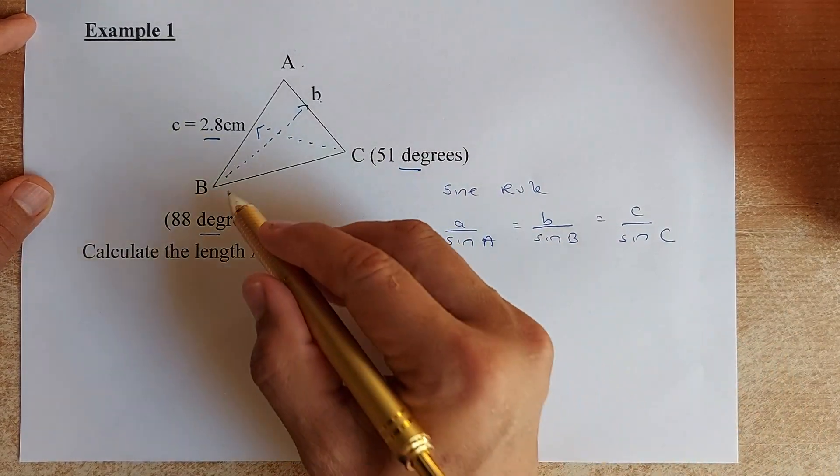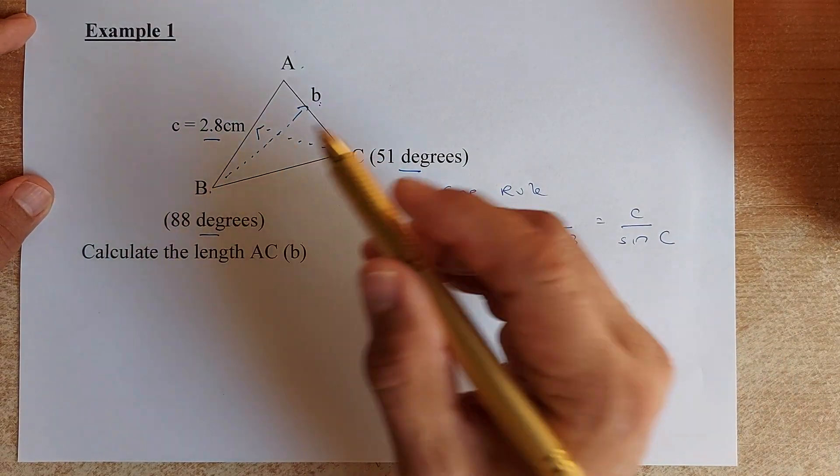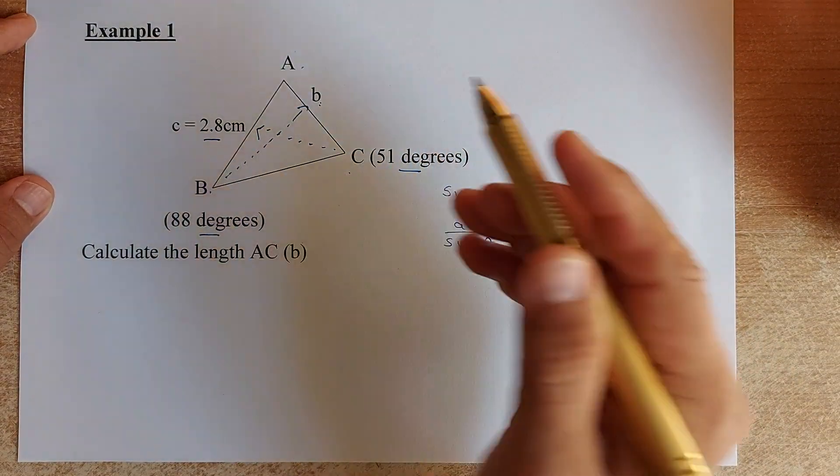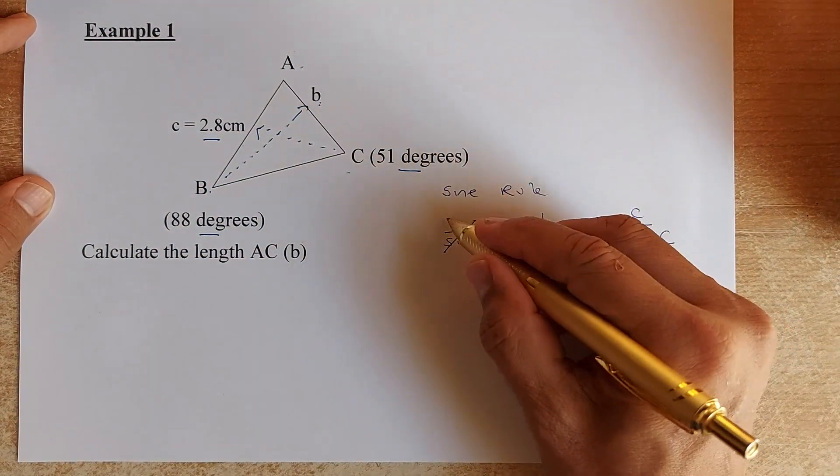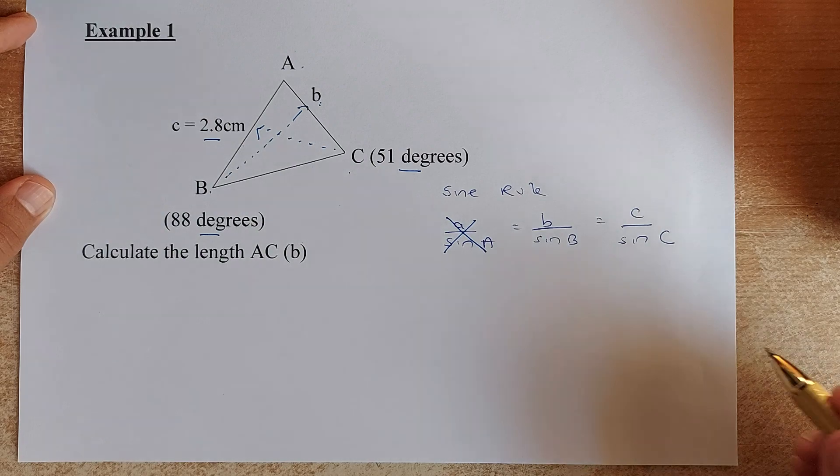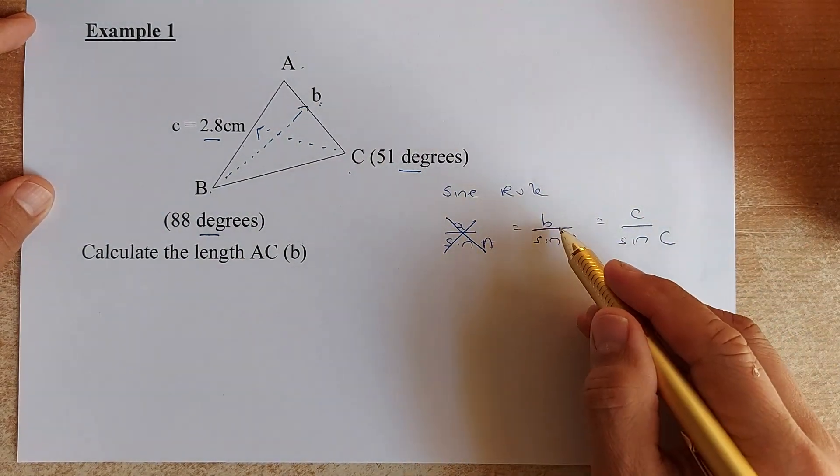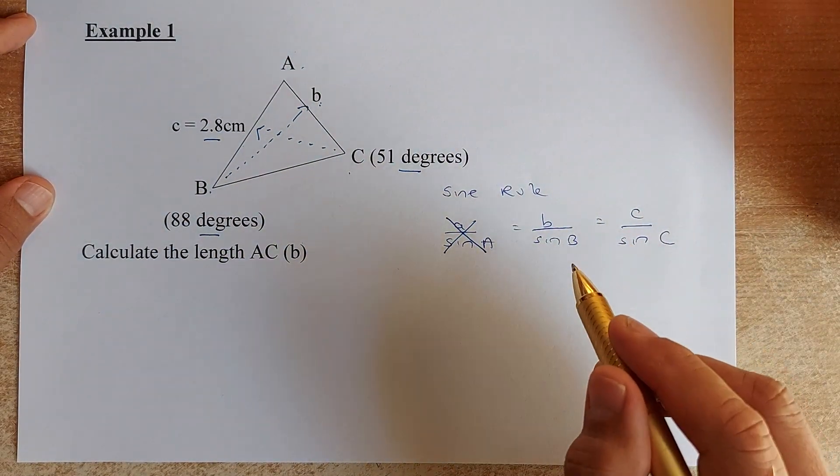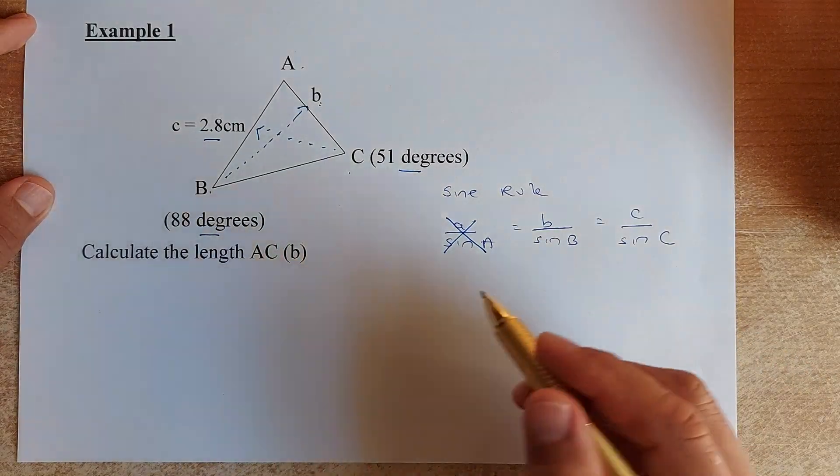In this case, do we have two pairs? We have b and capital B. We have c and capital C. There is no A in place so we can cancel the A. We are not interested in A. We shall use this formula.